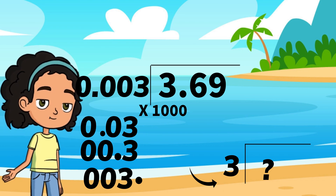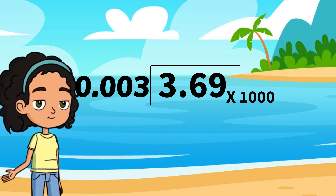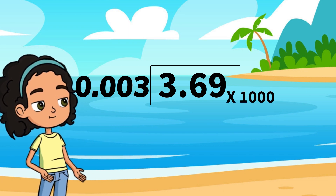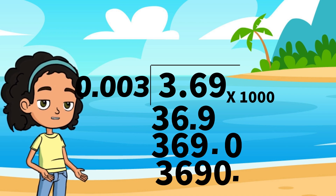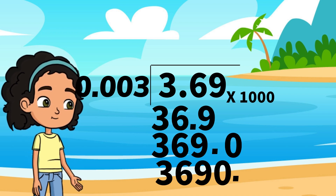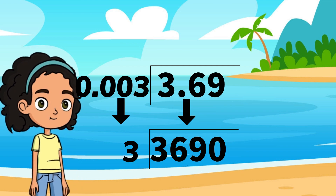Let's do the same to our dividend. One, two, three. Your new number is three thousand six hundred ninety.